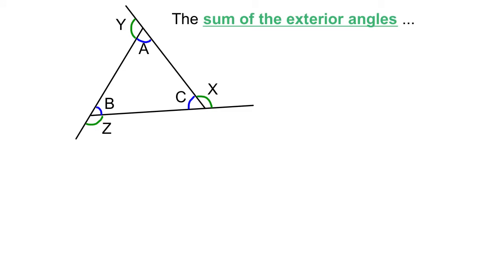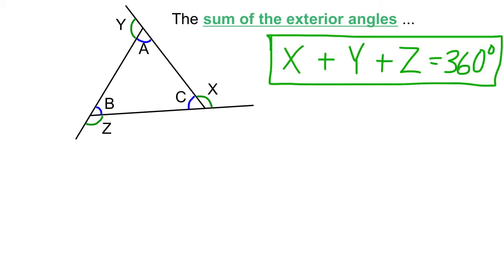The last property we'll look at is the sum of the exterior angles. Extending all the sides of a triangle shows the exterior angles. This only works with exterior angles in a consistent direction — a saw blade pattern. Labeling the exterior angles as X, Y, and Z, their sum X plus Y plus Z equals 360 degrees.